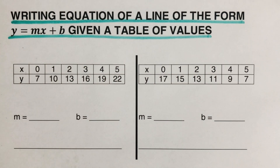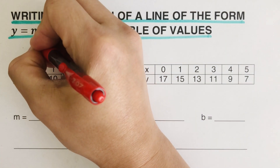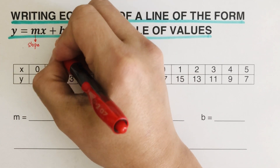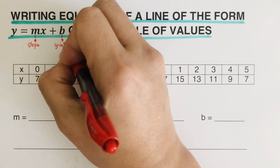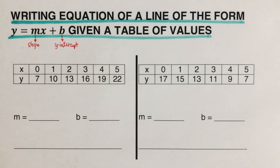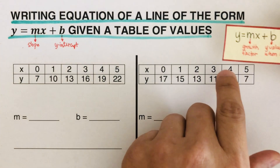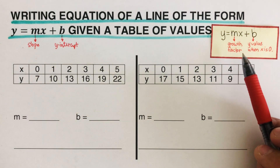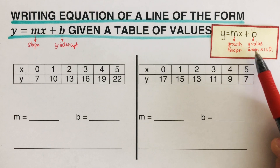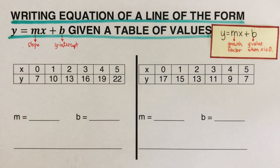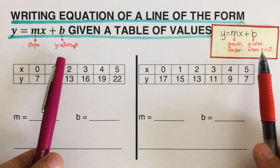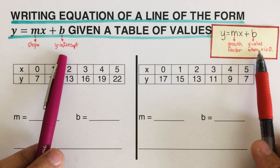In this equation, m represents the slope of the line and b is the y-intercept — the point where the line crosses the y-axis. In simple terms, m is the growth factor and b is the y-value when x is 0. They are the same concepts: m is the slope or growth factor, and b is the y-intercept.